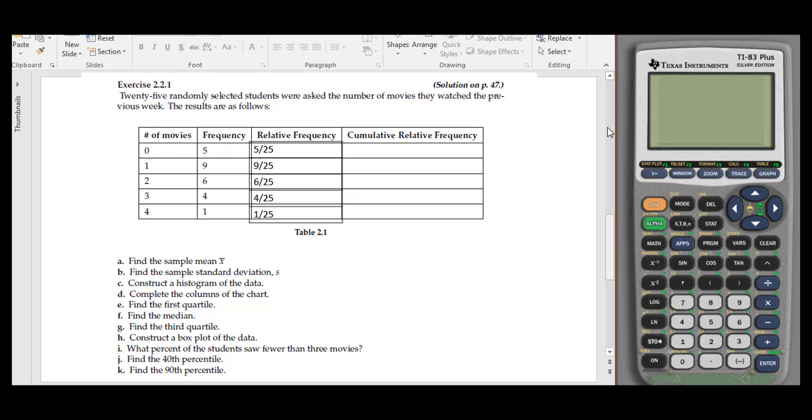For 3 movies, it's 4 out of 25, and so on. To find cumulative relative frequencies, we add them up as they go along. Since 5 over 25 is the first value for 0 movies, and there's no negative movies, we have 0 plus 5 over 25, which gives us 5 over 25 as the cumulative relative frequency. The first value will always be the same.